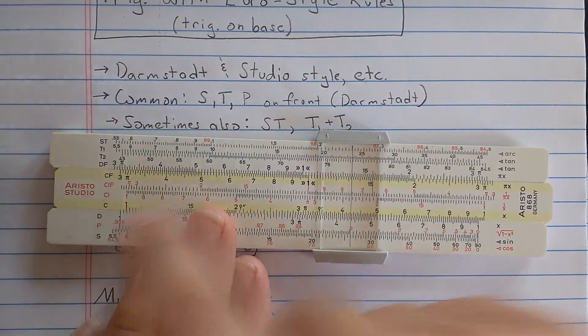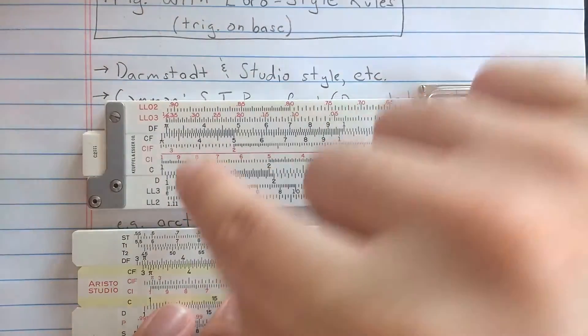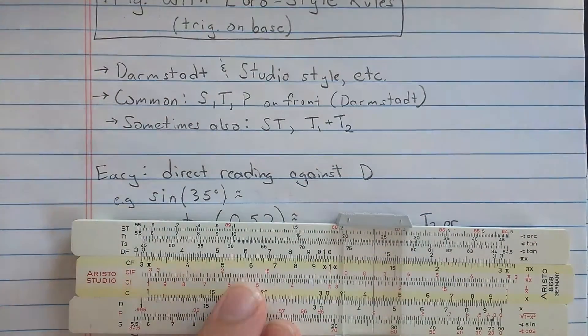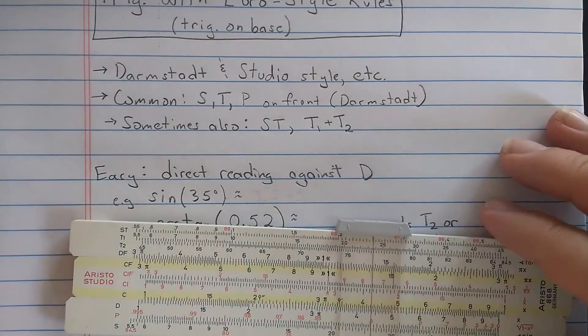Here you have the folded scales, and those are essentially arranged the same way as they are on the American slide rule. The difference is really in using the trigonometry scales.